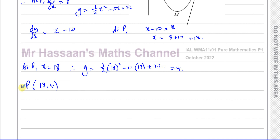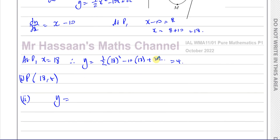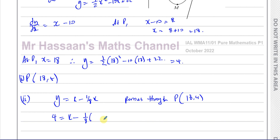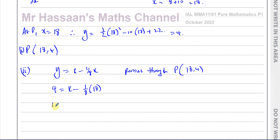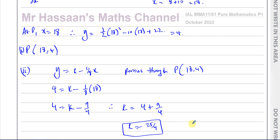Now for part 2, we find the value of k. The equation of the line is y equals k minus one-eighth x, and this line passes through P which is (18, 4). Substituting y equals 4 and x equals 18: 4 equals k minus 18 over 8, which simplifies to k minus 9 over 4. Therefore k equals 4 plus 9 over 4, which is 16 over 4 plus 9 over 4, giving k equals 25 over 4, or 6.25.